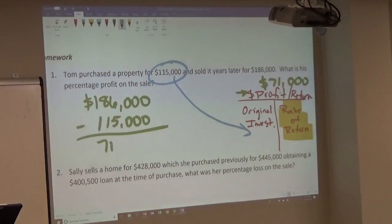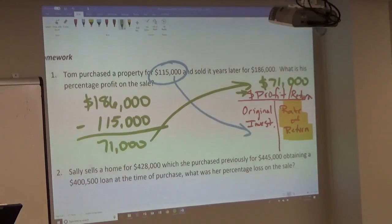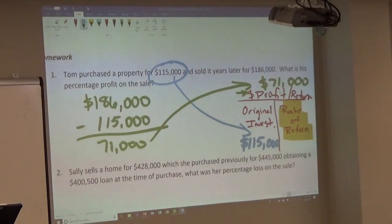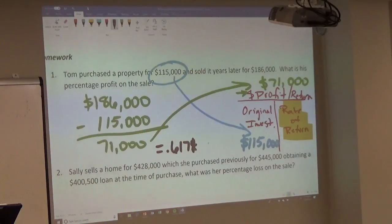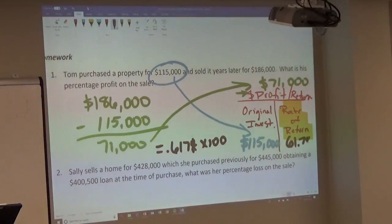We bring $71,000 down from there, and we also bring down the investment of $115,000. That sets up our math: $71,000 divided by $115,000 equals 0.6174. Times 100 because it's a rate, that gives us a total rate of return of 61.74%.